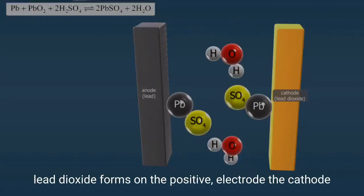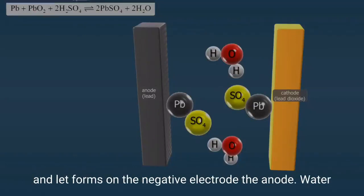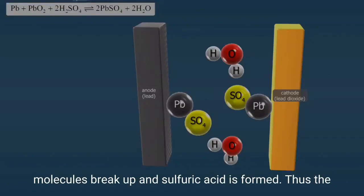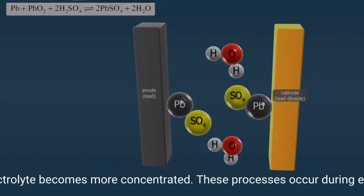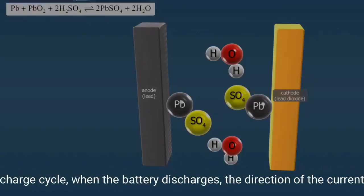Lead dioxide forms on the positive electrode, the cathode, and lead forms on the negative electrode, the anode. Water molecules break up and sulfuric acid is formed. Thus, the electrolyte becomes more concentrated. These processes occur during each charge cycle.